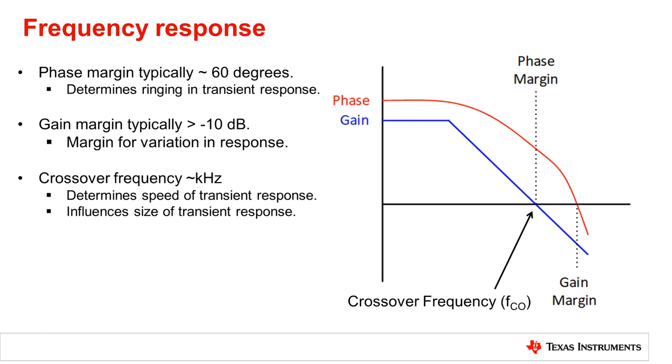Crossover frequency is the frequency at which the gain crosses over the zero dB point and determines the speed of the transient response as well as influences the magnitude. Making the crossover frequency higher will decrease the magnitude of the response as well as the time it takes to reach the maximum amplitude.